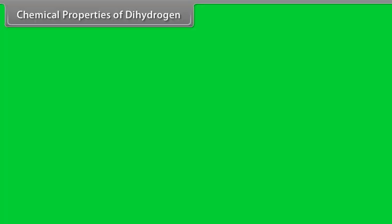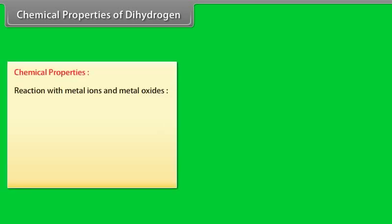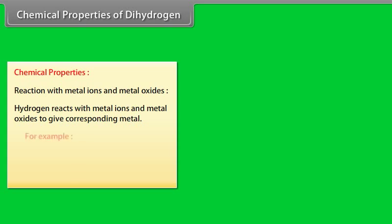Chemical properties of dihydrogen. Reaction with metal ions and metal oxides: Hydrogen reacts with metal ions and metal oxides to give corresponding metal. For example...